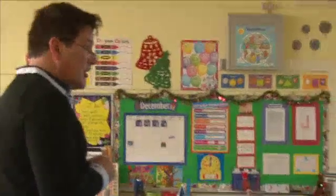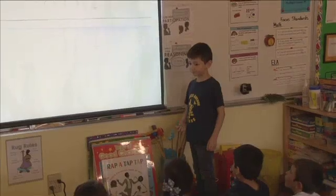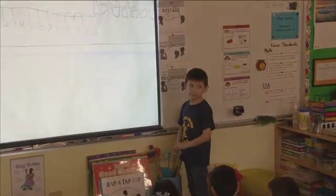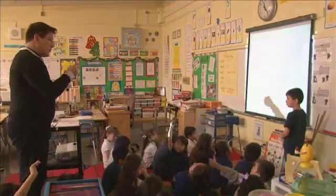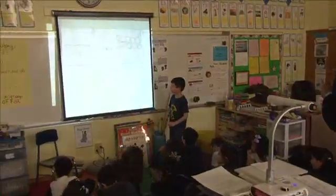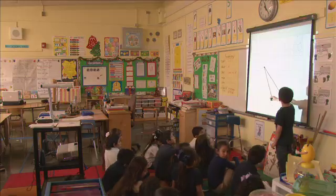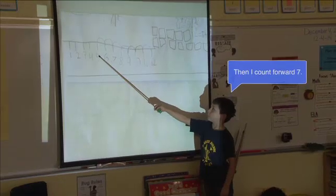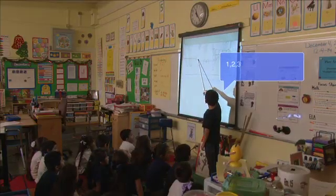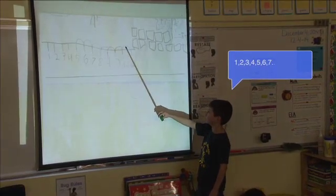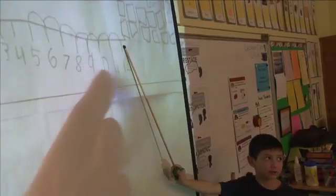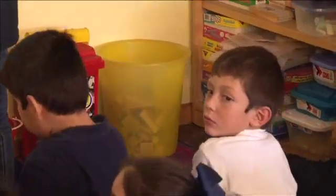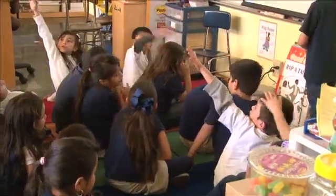The next student, Eduardo, shared his number line with the class. The California Framework calls for students to use a number line to add and subtract numbers. A number line is more abstract than the counter strategy. It helps students begin to see the relationships between numbers, and it is important in subsequent grade levels. There were five fish there, then I count forward seven — one, two, three, four, five, six, seven — and that made 12. Why did you count seven spaces to 12? Because that was the number of fish. Who can tell us why did Eduardo stop at 12 on his number line? Why didn't he go any further? There were 12 fish.